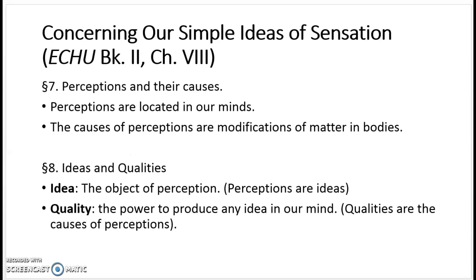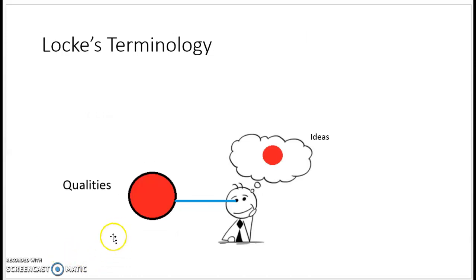That's what he does in this section concerning our simple ideas of sensation. First, he wants to establish some terminology. He wants to distinguish between what he calls ideas and what he calls qualities. The basic idea here is that the idea is what's in your head — the perception. And the quality is whatever property the external object has which causes or produces the ideas in your mind.